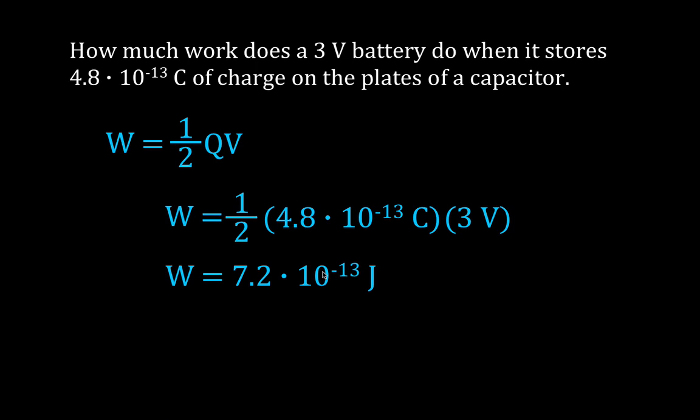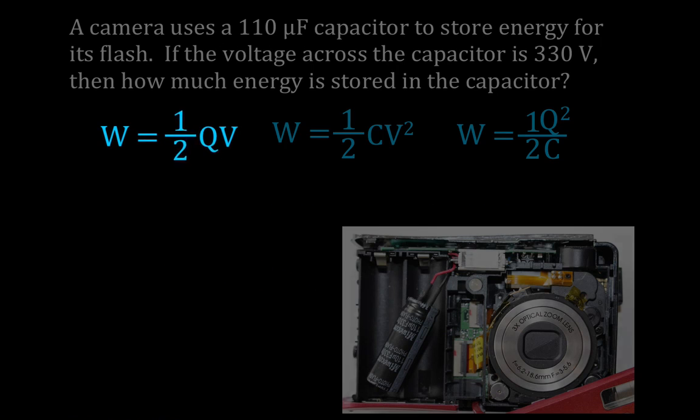But it's also not only the work, but it's also the energy. So you might ask, what's the energy stored in the capacitor? Well, the work and the energy are the same. It's electrical potential energy. And in order to store something, you have to do work. So the work and energy are the same. So we do 7.2 times 10 to minus 13 joules of work, or the battery does.